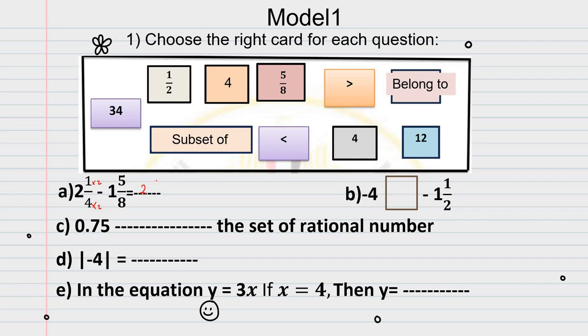The new fraction would be 2 and 2 over 8 minus 1 and 5 over 8. What should I do next? Let's ask ourselves, can I subtract 2 minus 5, or can I take away 5 from 2? No, I can't. So what should I do here? I will borrow 1 from the 2. If I borrow 1 from the 2, the 2 becomes 1. And here, 2 will be, yes, it will be 10.